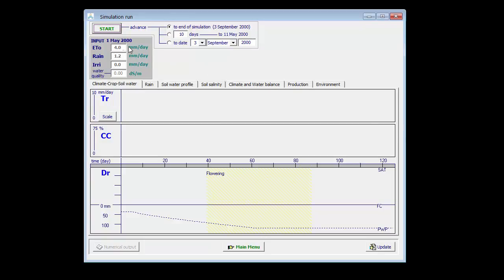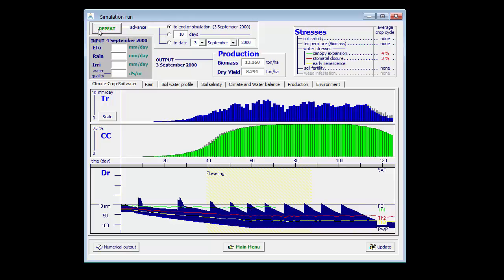Let me run a simulation which consists of the simulation of irrigated tomatoes. The dry yield is given here and corresponds with 8.3 tons per hectare.